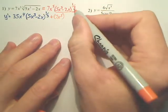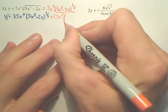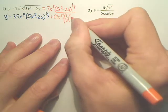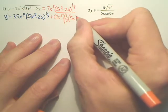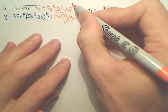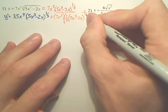So here it goes. I take the 1/3, bring it out front. It's going to be kind of big. You have a 1/3, bring it out front. Leave the inside. 5x to the 3rd minus 2x. Subtract 1 from 1/3 and you get negative 2/3.